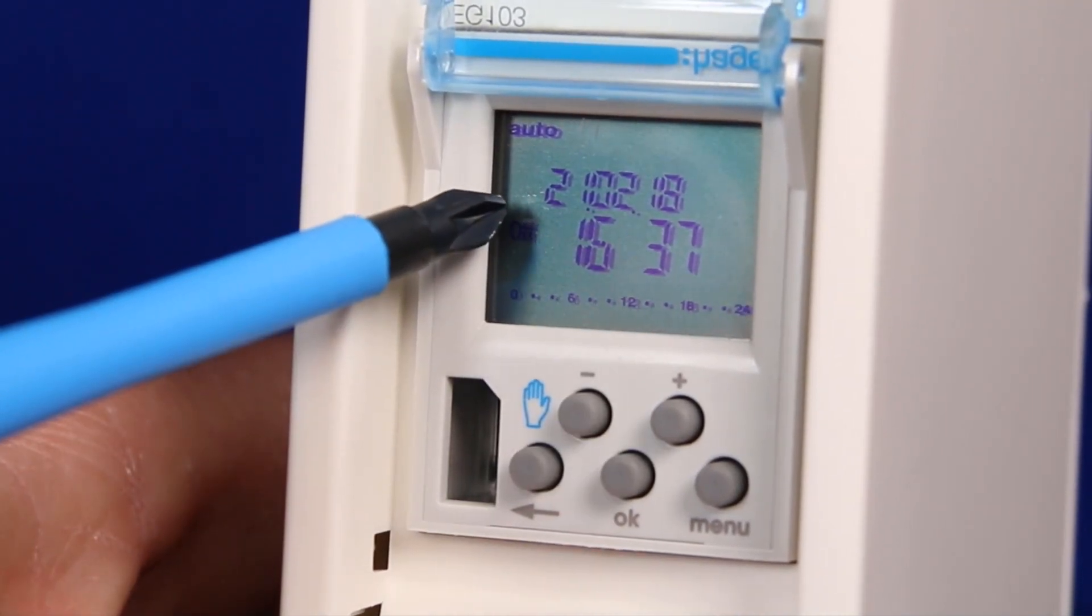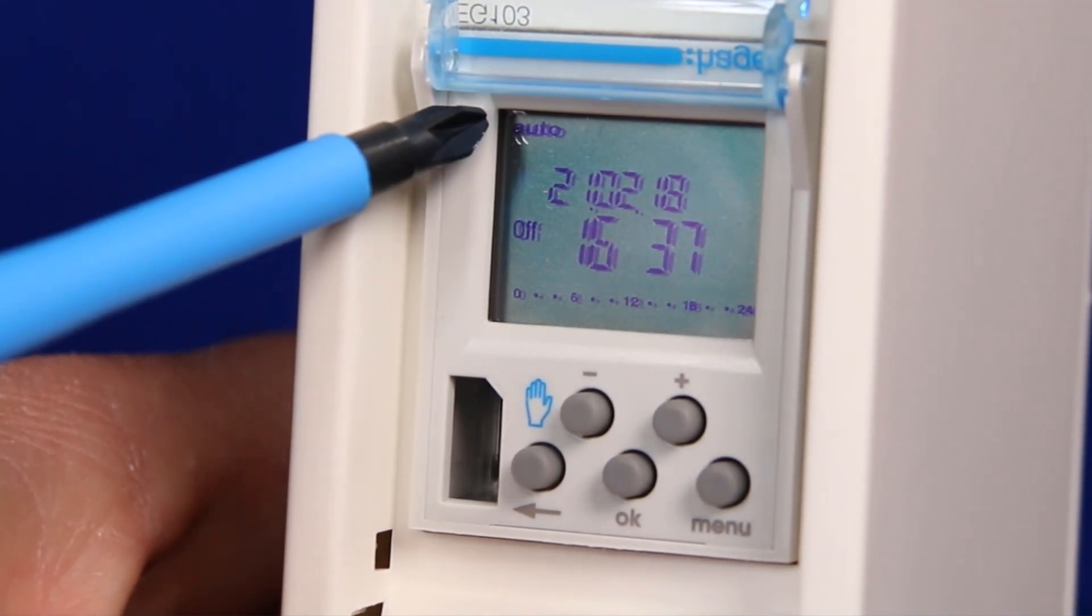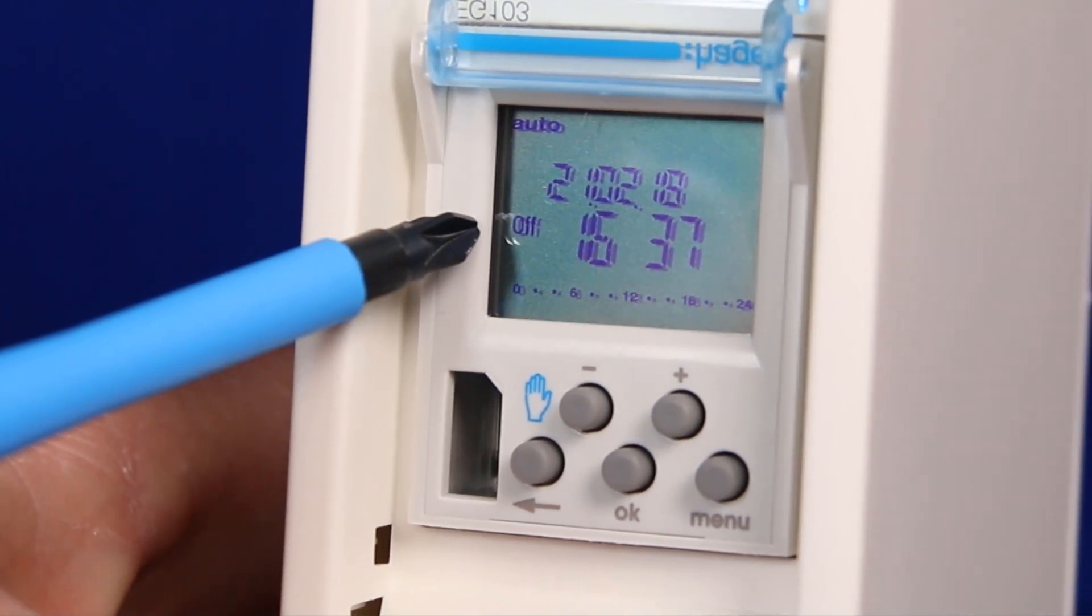The display is telling us at present the current time and date and also that it is in automatic mode. The contacts you can see are also in the off position.